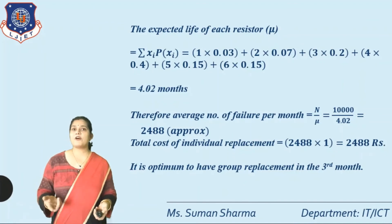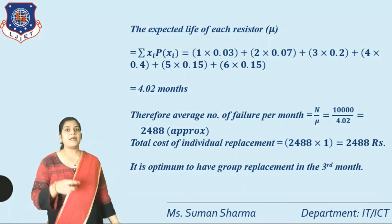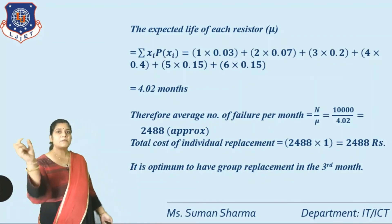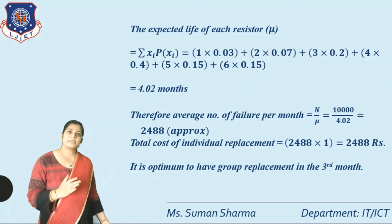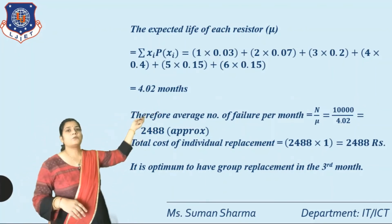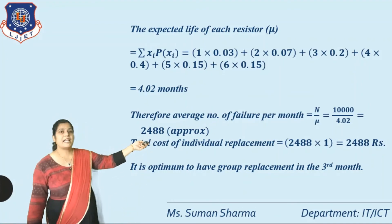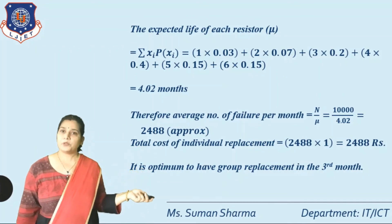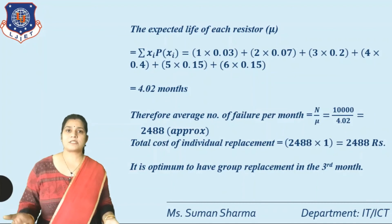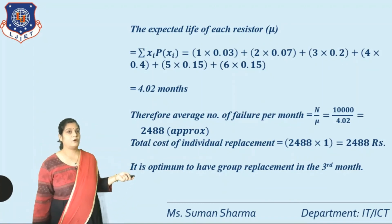The expected life of each register, mu, is found by Σ(x × P(x)): 1×0.03 + 2×0.07 + 3×0.2 + 4×0.4 + 5×0.15 + 6×0.15 = 4.02 months. Therefore average number of failures per month = N ÷ mu = 10,000 ÷ 4.02 ≈ 2488. Total cost of individual replacement = 2488 × 1 = rupees 2488.